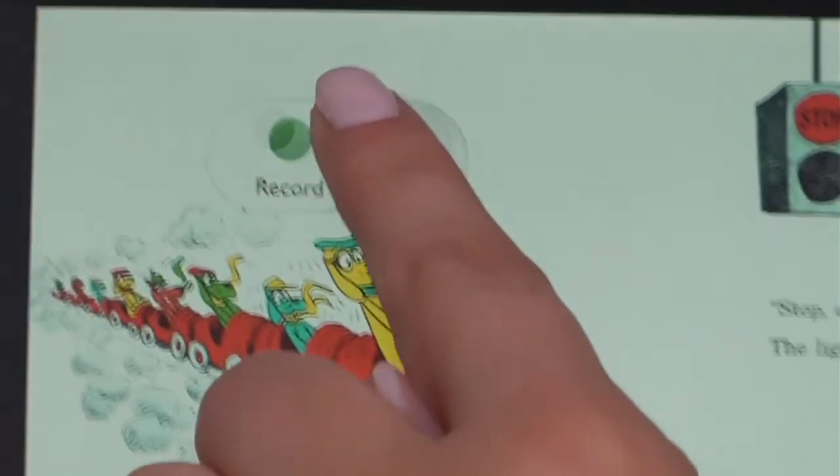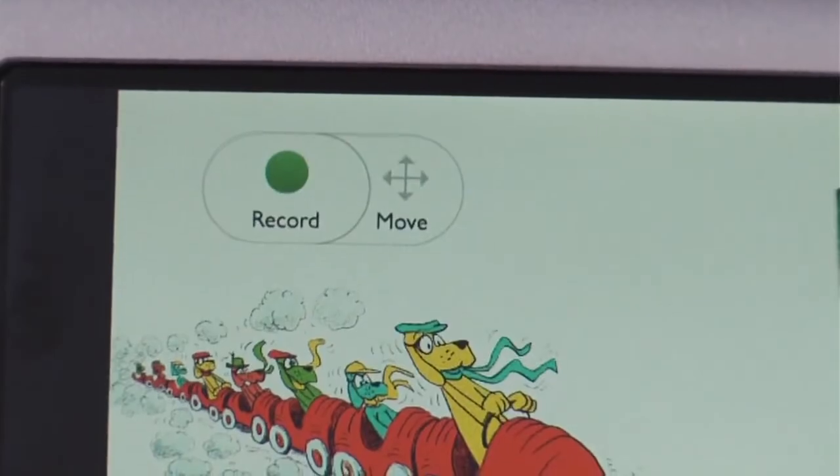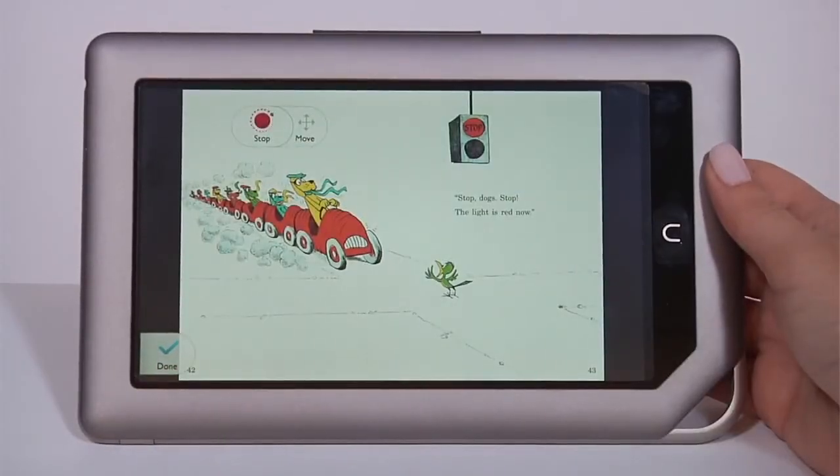Use the Move button to place the recording controls wherever you want. Stop dogs, stop! The light is red now.